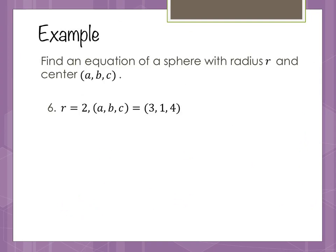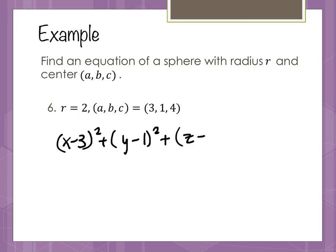For the example of a sphere with radius 2 and center (3, 1, 4), we substitute into the formula: (x minus 3) squared plus (y minus 1) squared plus (z minus 4) squared equals 4.